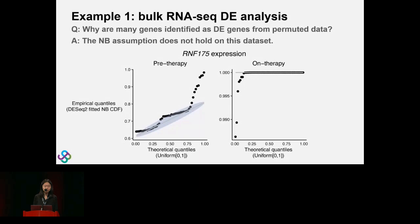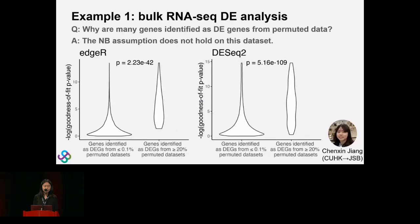Looking at genes collectively, the left group shows genes rarely identified from permuted data — they are good — while the right group shows genes often identified from permuted data — they are problematic. Checking the goodness of fit of the negative binomial assumption using the negative log of the p-value, a smaller p-value indicates poorer fitting. As expected, the problematic genes show poorer negative binomial fit than the good group. Credit goes to undergraduate student Chen Xin Jiang from Chinese University of Hong Kong, who corrected how we computed the p-value. The qualitative conclusion still stands, and she will join my group this fall.